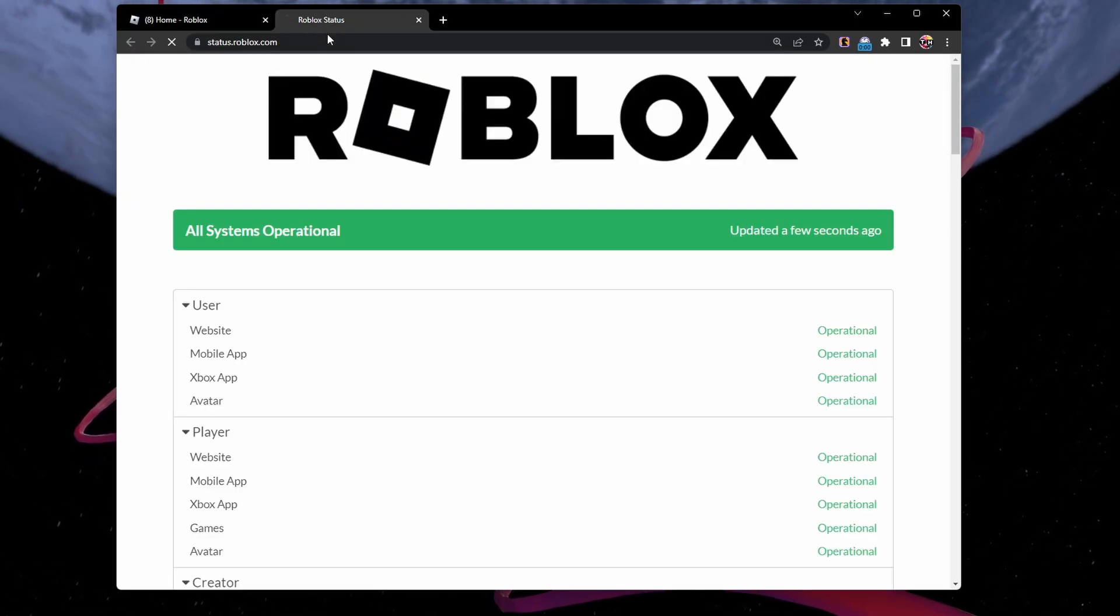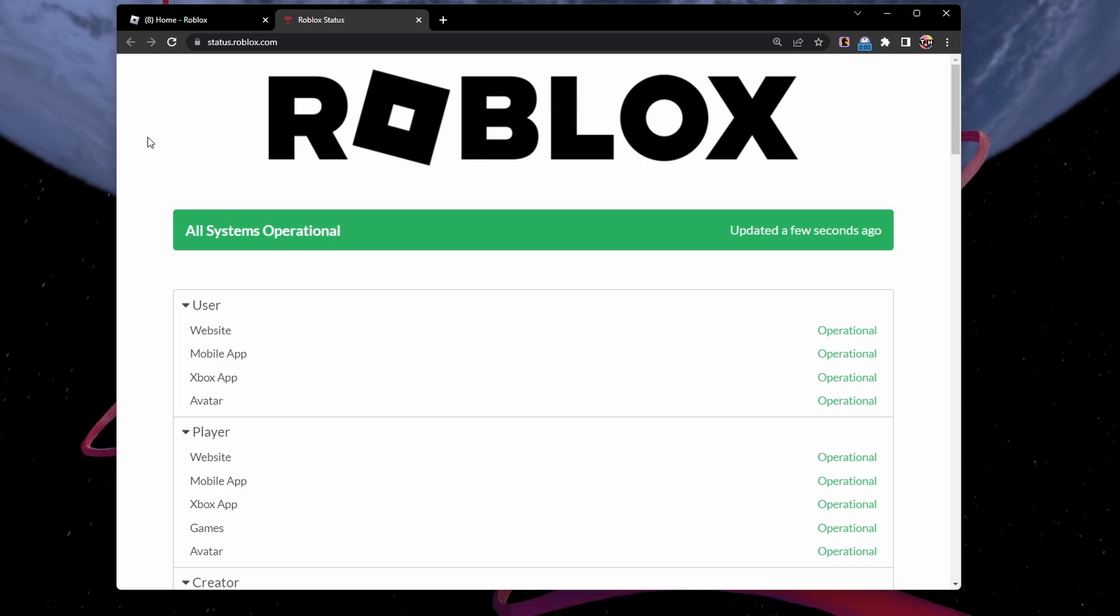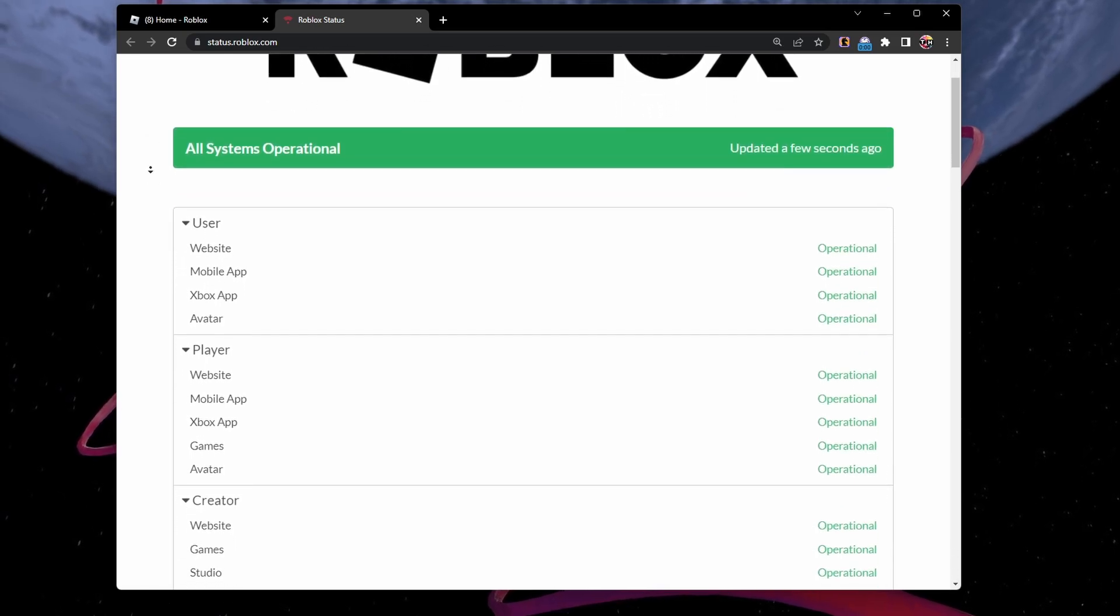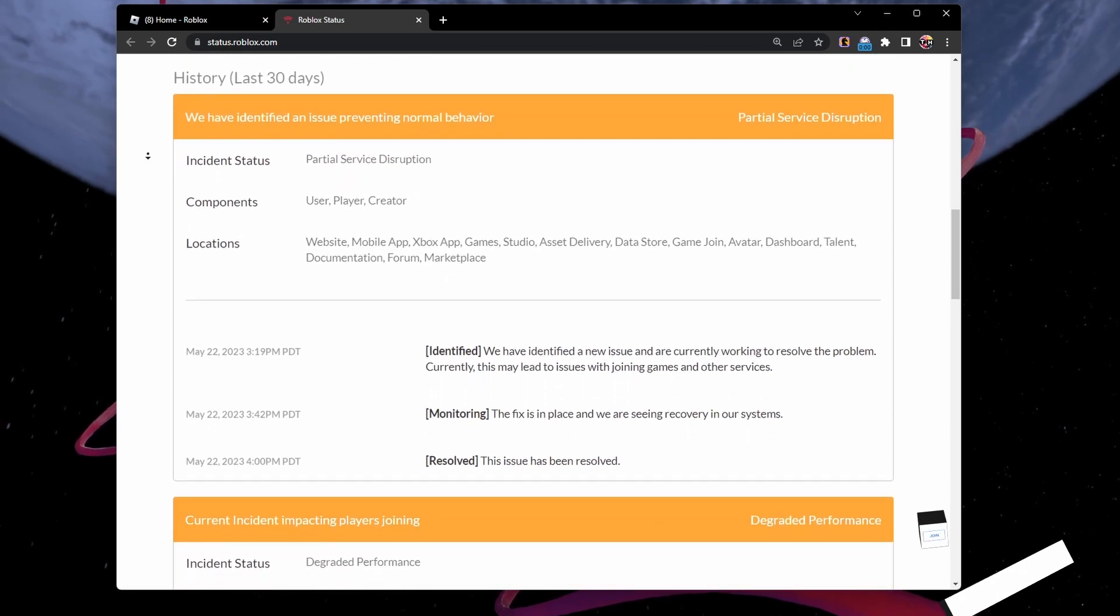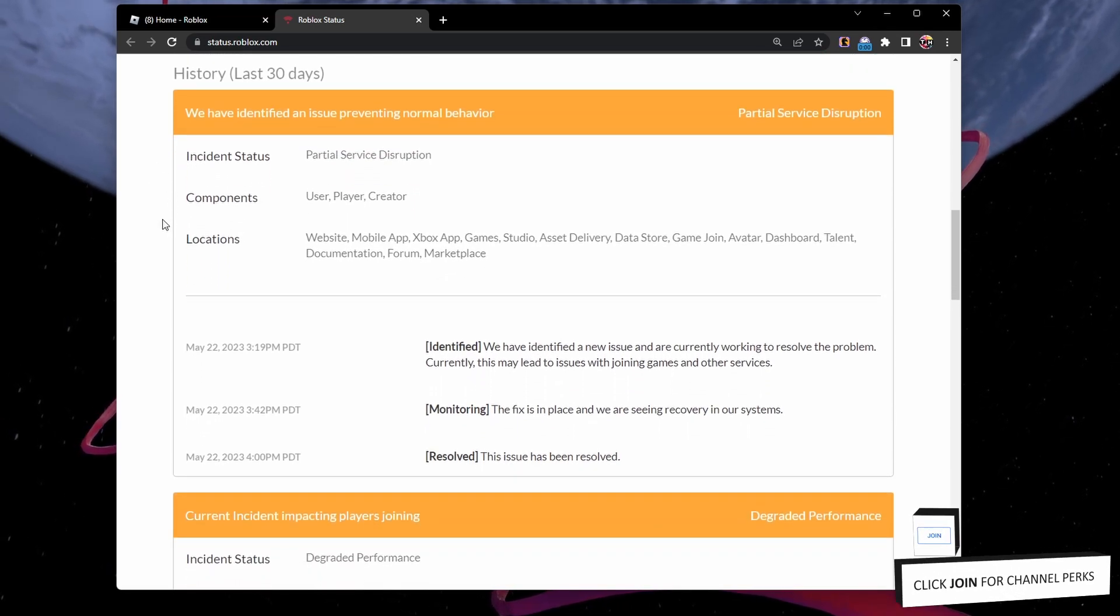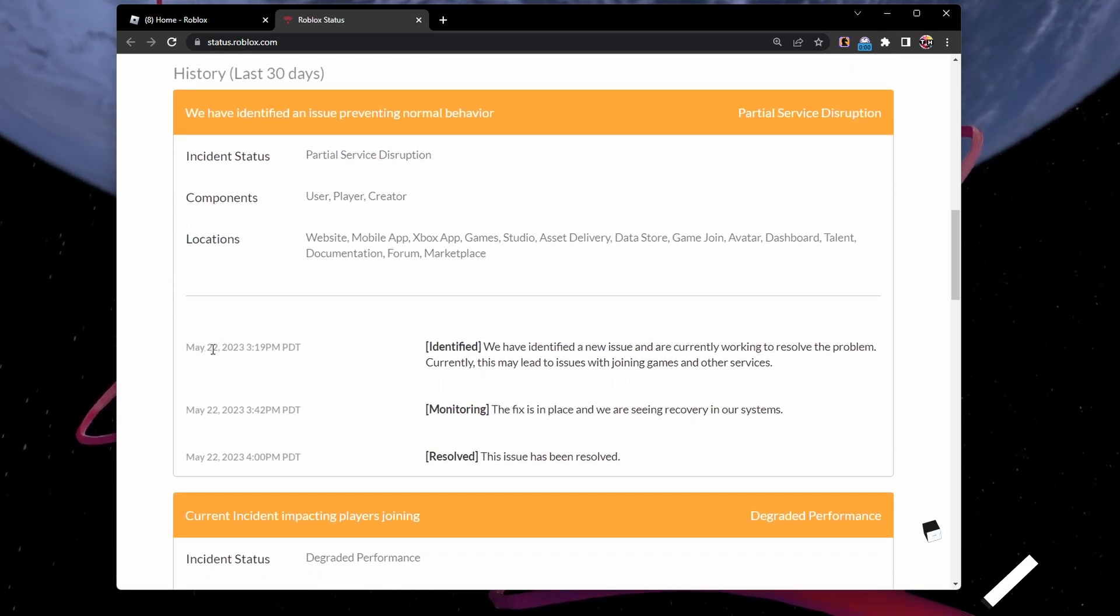Navigate to status.roblox.com and verify if the servers are operational. You can see current and past server related problems, such as server outages or maintenance planned on servers in your region.